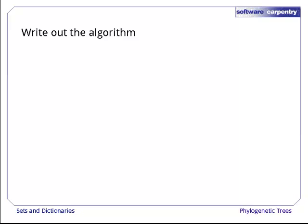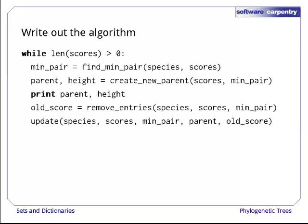Time to create some code. Let's write out the algorithm we discussed earlier. While we have some scores left to process, find the closest pair, create a new parent, print it out or record it somewhere to use later, remove entries that refer to the pair we're combining, and add new entries to the scores table.